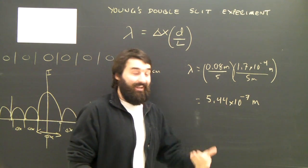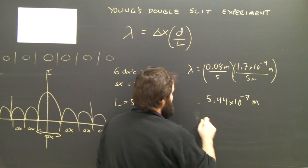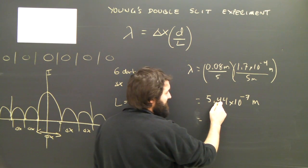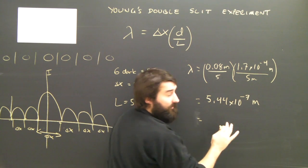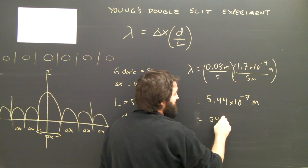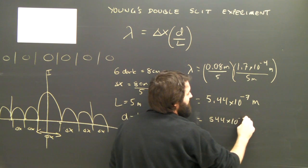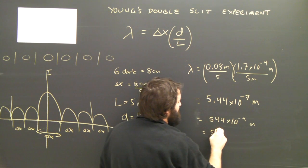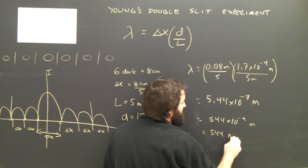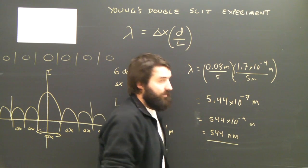10 to the negative six is micrometers. Light is usually expressed in nanometers, which is 10 to the negative nine. So that means moving over two more decimal places, we get 544 times 10 to the negative nine meters, which is 544 nanometers.